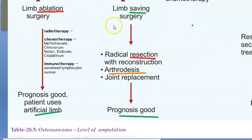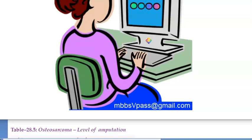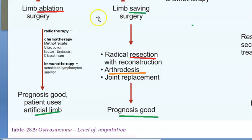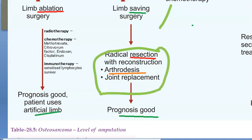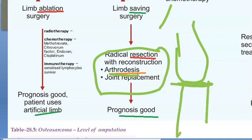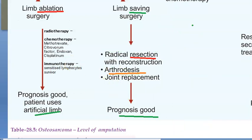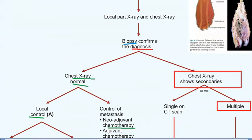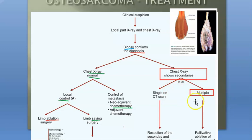Limb-saving surgery is an alternative to amputation when the chest X-ray is normal. In this procedure, only the lesion is removed radically and the limb is reconstructed using another bone or by arthrodesis - fusing the joint so it cannot move - or by total joint replacement such as total knee replacement. The prognosis is good in these cases because there is no metastasis, which gives confidence in the outcome.